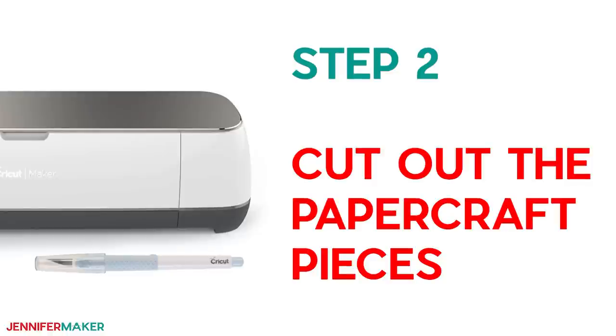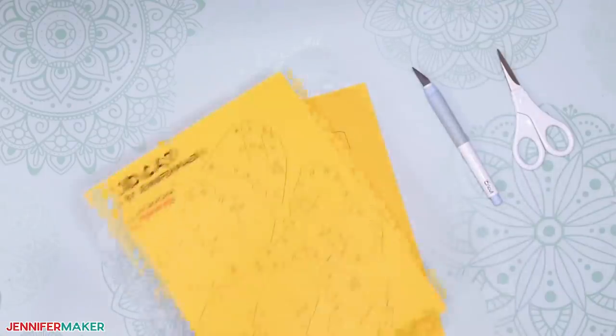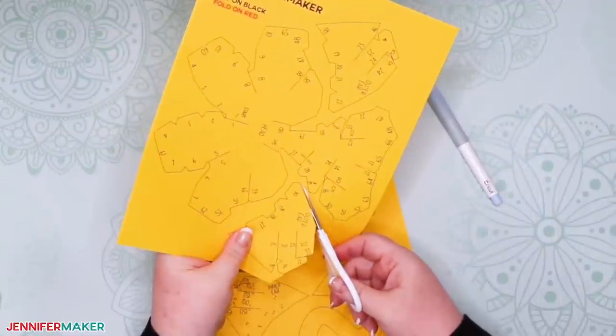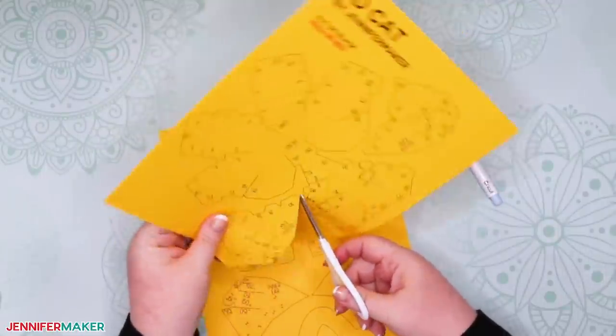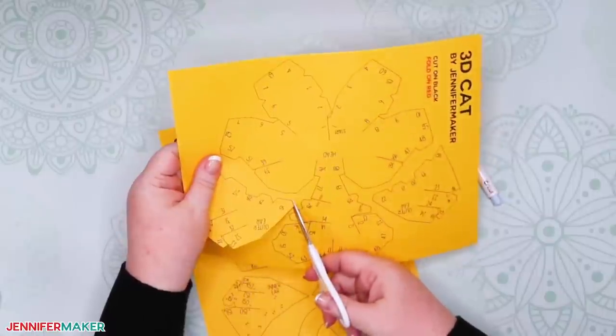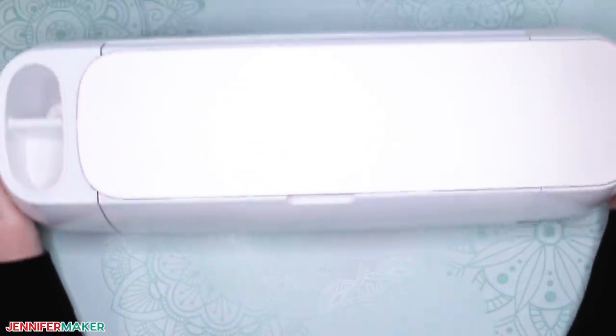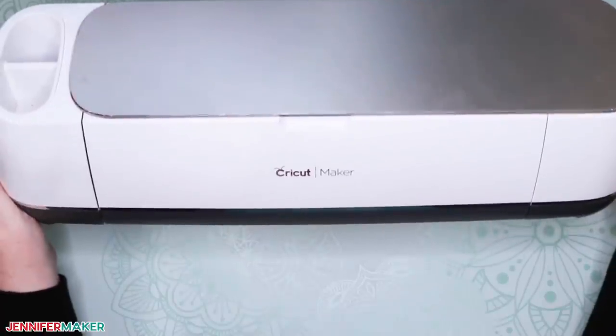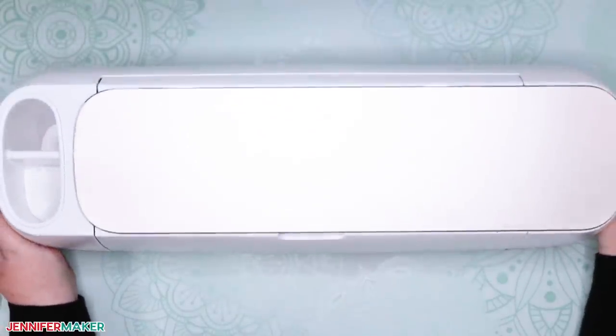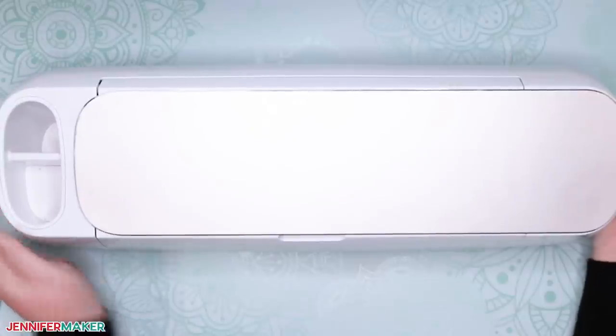Step two, cut out the paper craft pieces. If you're going to cut your paper craft by hand, print out the PDF on card stock and cut it apart with a craft knife or scissors. If you're going to cut your cat with a cutting machine, you'll want to do a little prep work first, but it will save you a ton of time in the long run. Let me show you how to prep this paper craft pattern for a Cricut cutting machine.